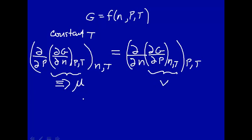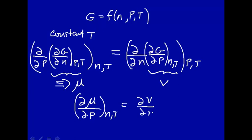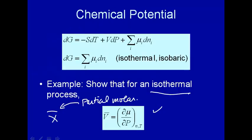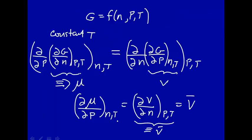So we can write this: how mu changes with p at constant n and T is how volume changes with n at constant p and T, and this is defined as the partial molar volume — how volume changes with number of moles. So we've shown that partial molar volume is how mu changes with p at constant n and T.